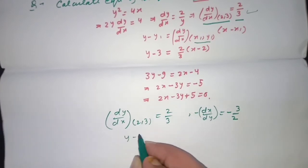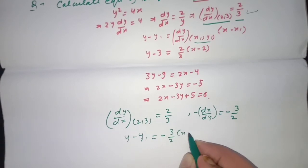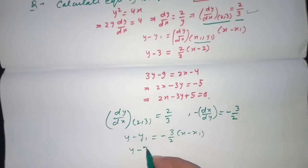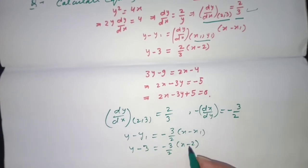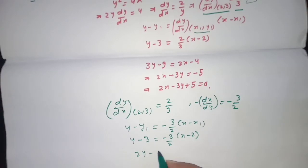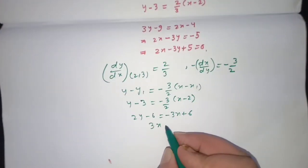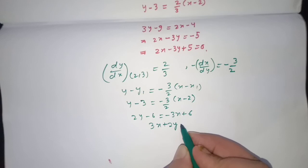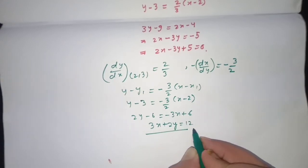Substituting y1 = 3, x1 = 2: y − 3 = −(3/2)(x − 2). Cross multiplying: 2y − 6 = −3x + 6. Rearranging, we get 3x + 2y = 12. So that will be the equation of the normal.